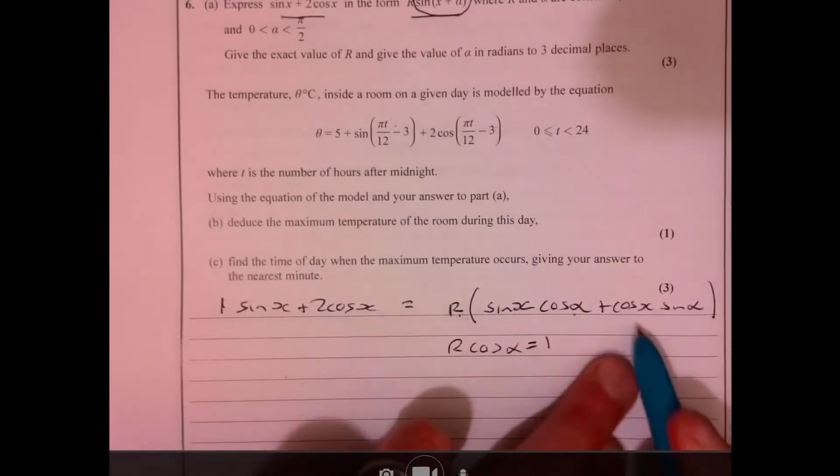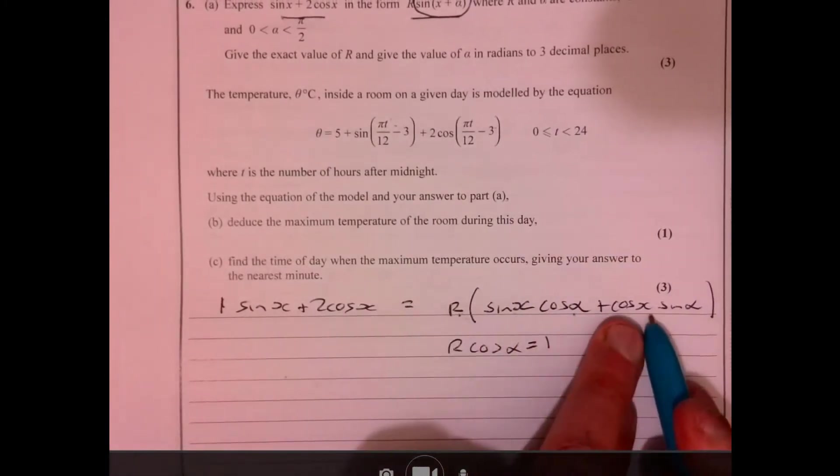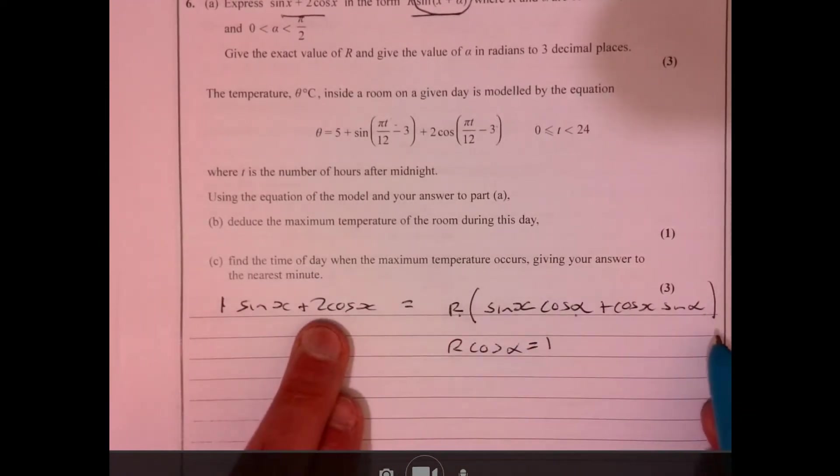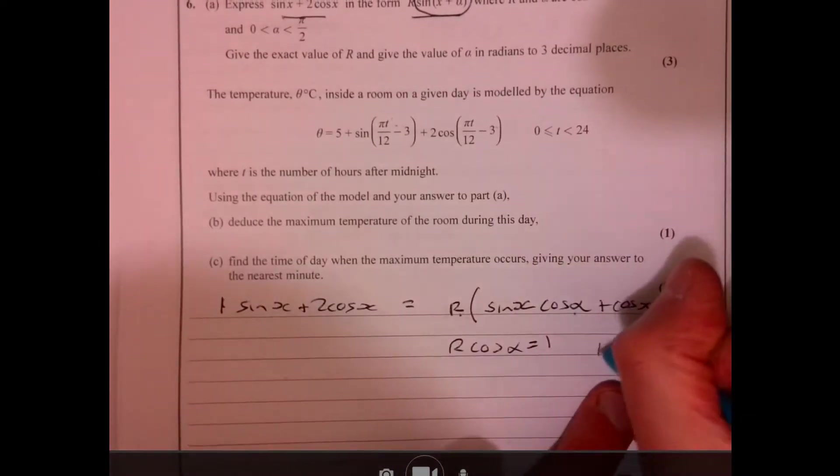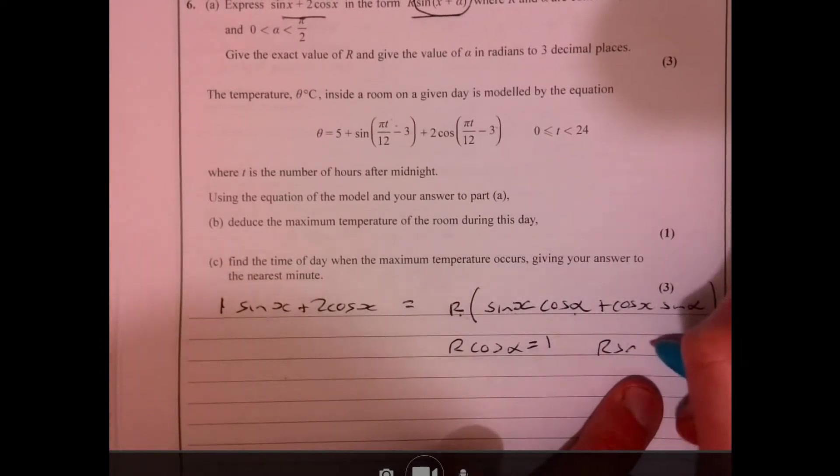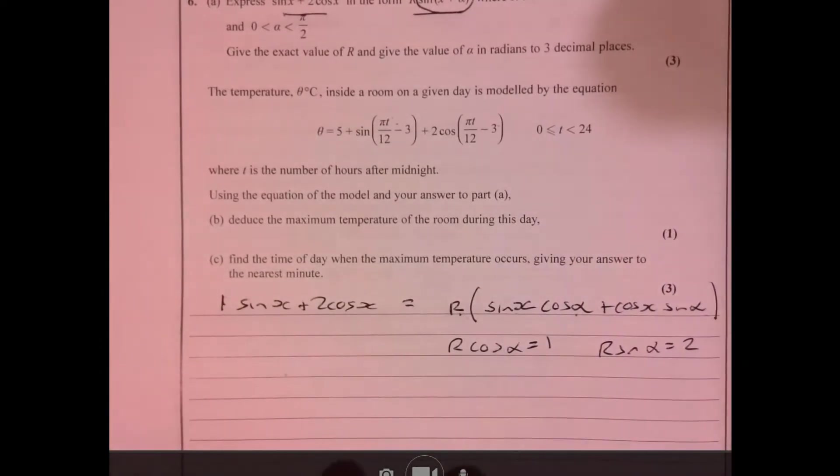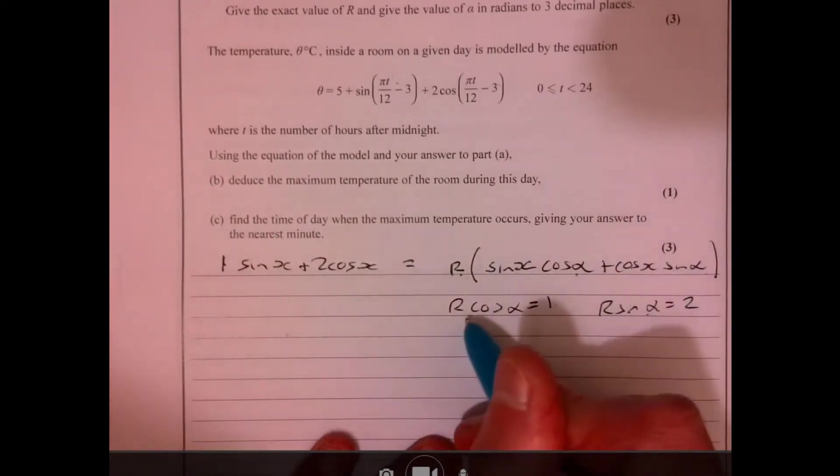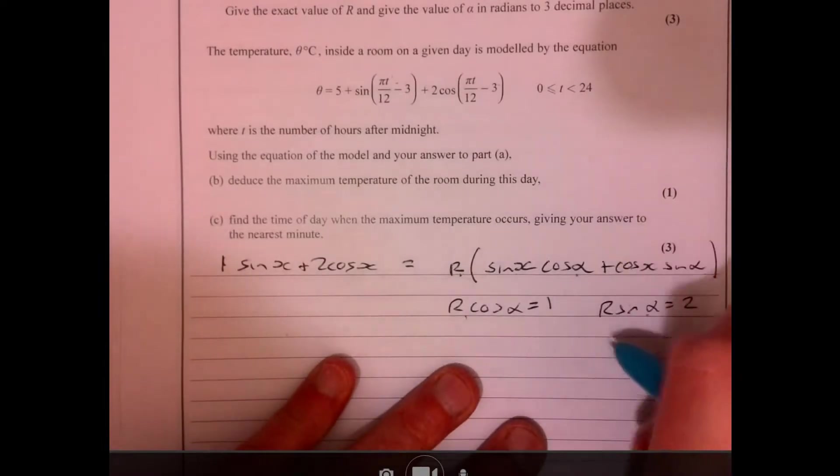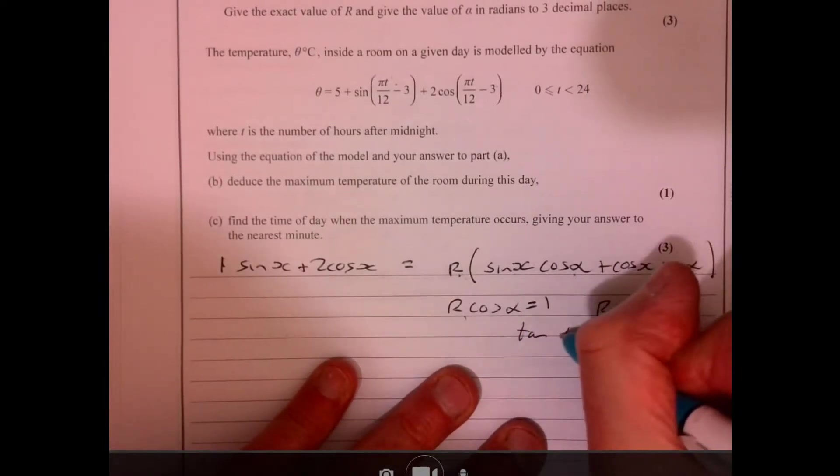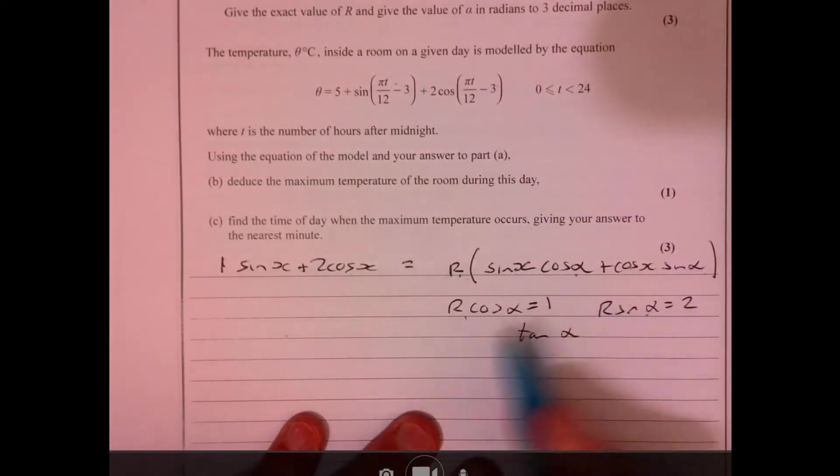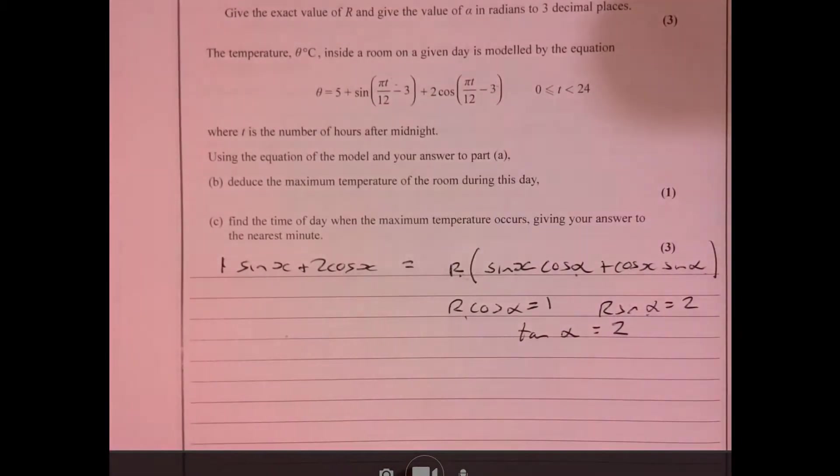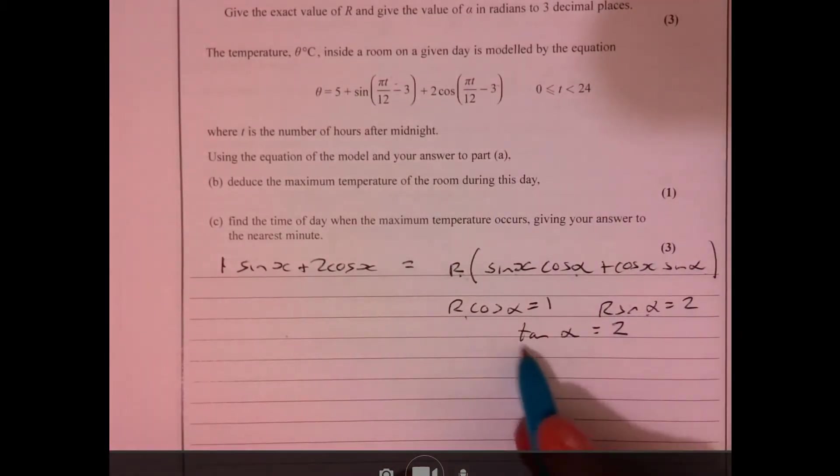So I can write r cos alpha must equal one. In exactly the same way here, I've got r times cos x times sine alpha, so that times that must equal two. I can now write r sine alpha equals two. Now think about how you can combine these together. This one divided by this one will give me tan alpha.